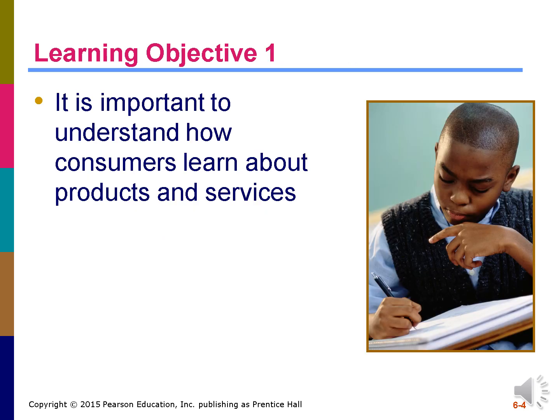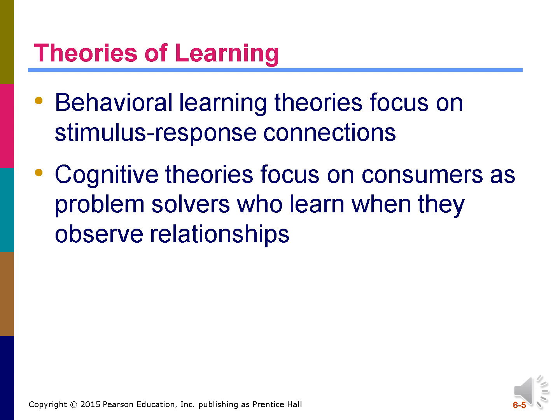Learning Objective 1 states that it is important to understand how consumers learn about products and services. Learning is a relatively permanent change in behavior caused by experience. The experience can be direct or it can be observed. Learning is an ongoing process. A consumer can learn from direct experience or vicariously by observing events that affect others. There are several learning theories which range from those that focus on connections between actions and consequences to those that focus on understanding complex relationships and problem solving.